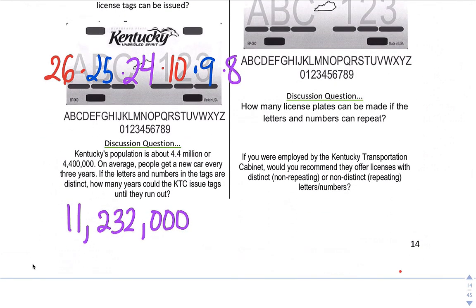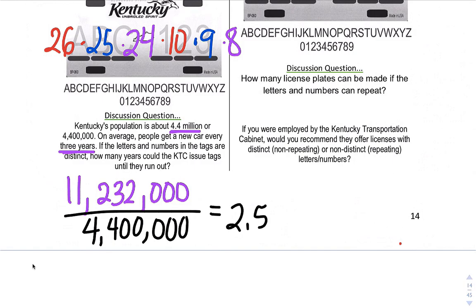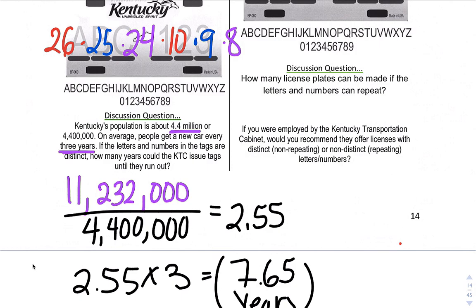Discussion question: Kentucky's population is about 4.4 million. On average, people get a new car every three years. If the letters and numbers in the tags are distinct, how many years could the Kentucky issue tags until they run out? We could divide this by 4,400,000. It ends up being around 2.55. So they could do this 2.55 times. They do it every three years, so if you take that 2.55 times 3, it would be about 7 point something years. So for every three years, it's about 7.65 years.